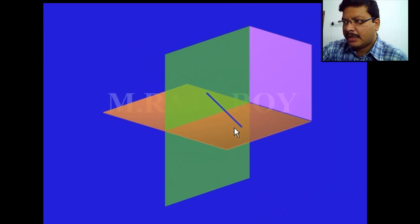Observe here this straight line is inclined 30 degrees to the horizontal plane and 60 degrees to the vertical plane. Now in this case, how to project the front view and top view.